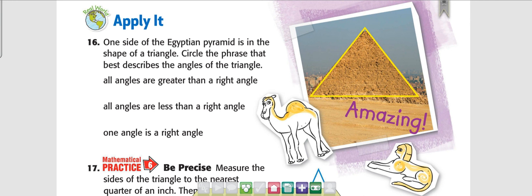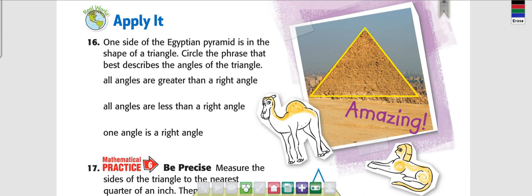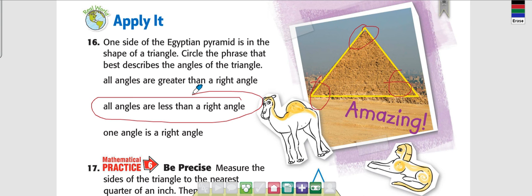Look at number 16. It says one side of the adjacent pyramid is in the shape of a triangle — circle the phrase that best describes the angles of the triangle. Remember, the angles are just the corners. Are all the angles greater than a right angle? No. Are all angles less than a right angle? Yes, they are. Is one angle a right angle? No. So circle that one.